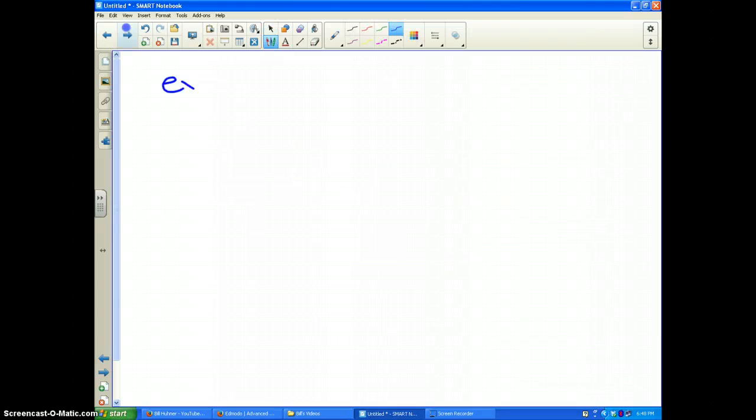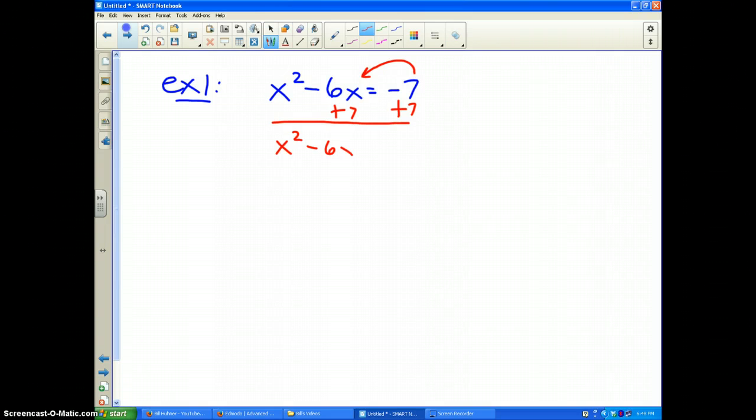Example number one. What I would like us to do is find the solutions to x² - 6x = -7. Well, just like always, the first thing we've got to do is make it equal to 0. So I've got to get that negative 7 over to the other side by adding 7. And so our problem becomes x² - 6x + 7 = 0.